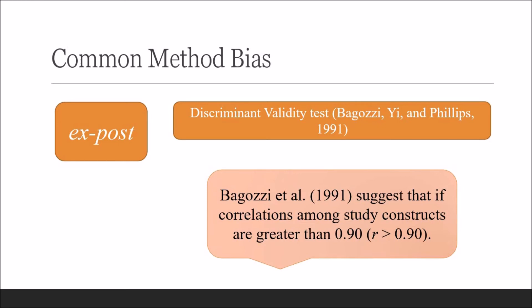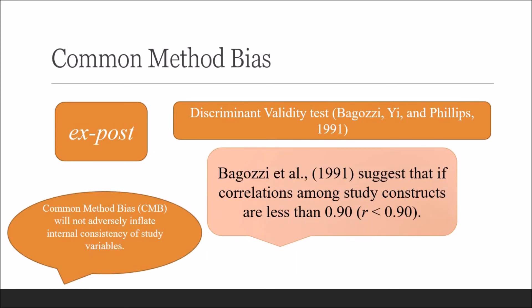Bagozzi et al., 1991 suggested that common method bias would be a detrimental issue only if the correlations among study constructs are greater than 0.90. Common method bias will not adversely inflate internal consistency of study variables if correlations among study variables are less than 0.90.